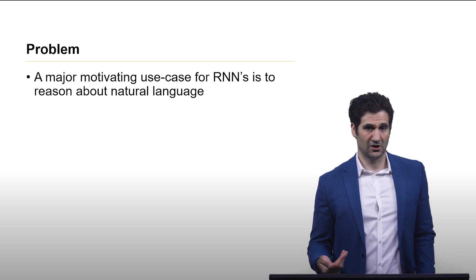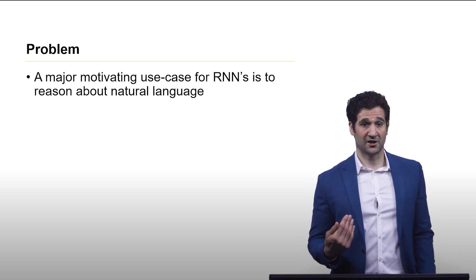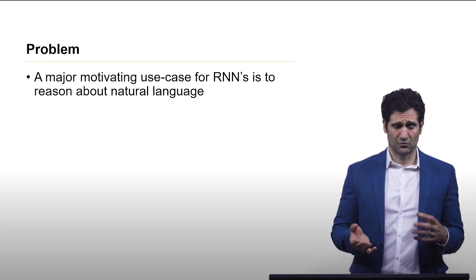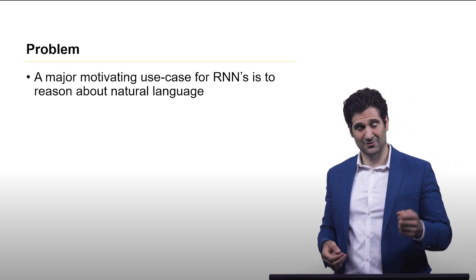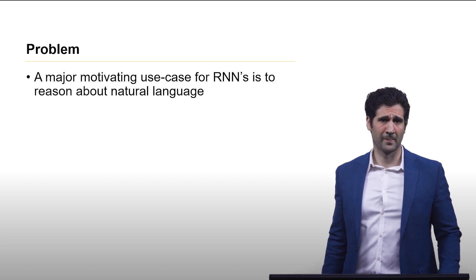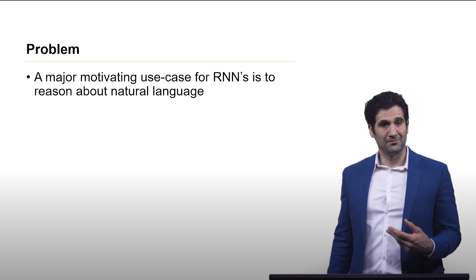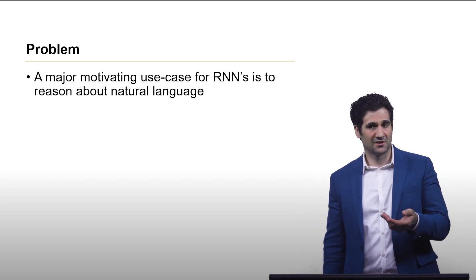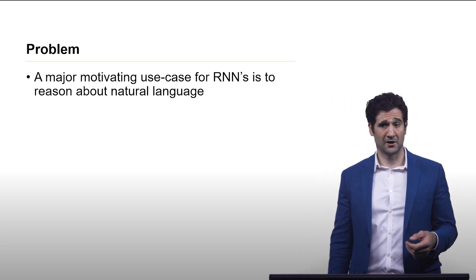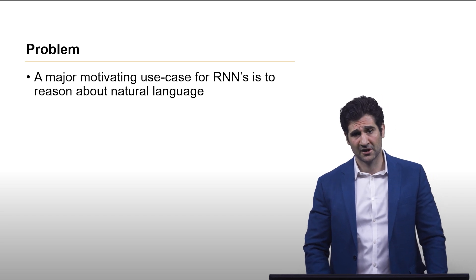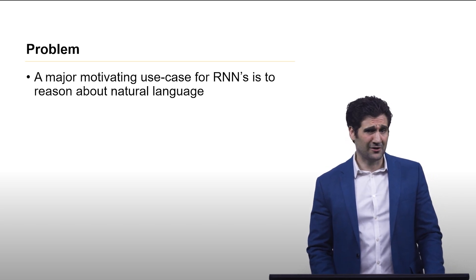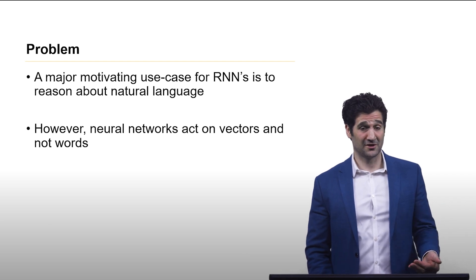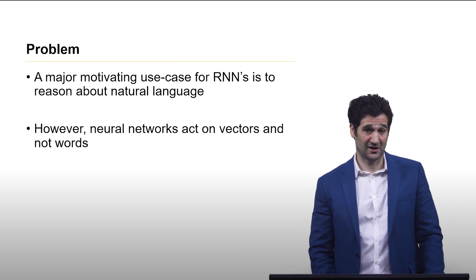A major motivating use case for RNNs is to reason about natural language. Earlier when we talked about architectures, we said here's your x vector, it's a word. Well, to some of you, that might have seemed kind of weird, because our language is not made up of numbers. It's made up of letters. So how do we bridge that gap? Because neural networks are designed to be used on vector representations of things and not words.